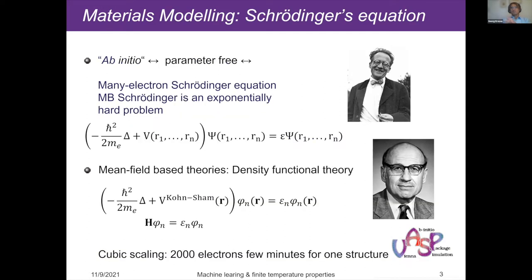So, materials modeling and the Schrödinger equation — you have heard a lot about this from Martin Maassmann and others in the VASP group. In principle, what we would like to solve is the many-body Schrödinger equation. It has a kinetic energy operator where the Laplacian acts on all coordinates R1 to Rn, plus interactions between electrons, and between electrons and ions. The complication is that this object depends on many degrees of freedom — with 1,000 electrons, you'd have 1,000 coordinates, and even storing this object is impossible. That's why density functional theory became so popular: it provides a nice way to get approximate solutions.